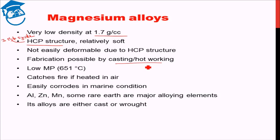Similar to aluminium, magnesium also has a very low melting point. Aluminium has a melting point of 660 degrees Celsius, while magnesium has a melting point of 651 degrees Celsius — quite similar.